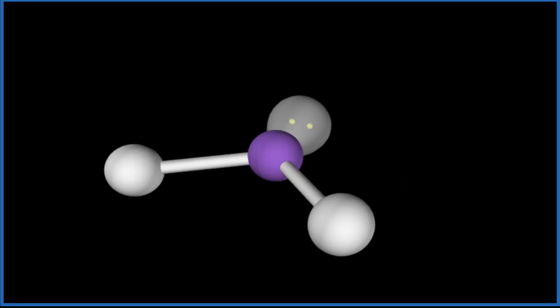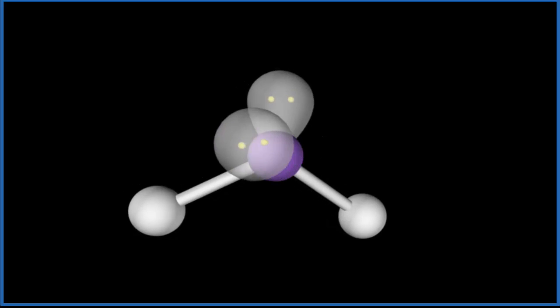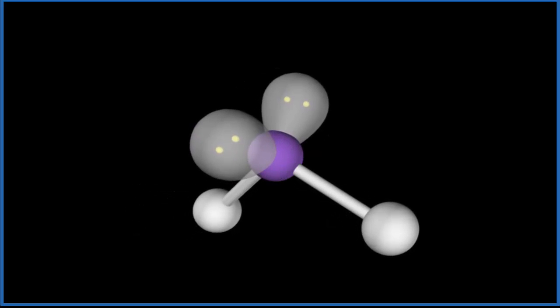We add one, and you can see it pushes everything down. We add another, and we end up with what's called a bent molecular geometry. And the bond angle is about 109.5. In this case, it ends up being right around 103, 105 degrees.